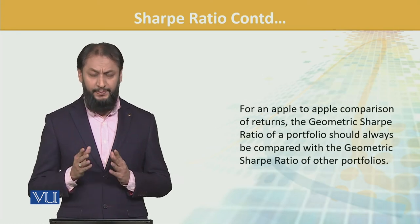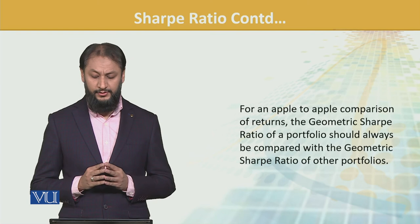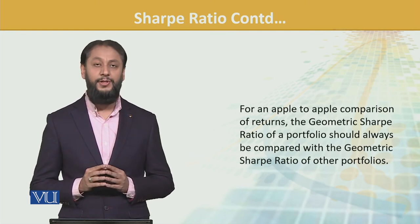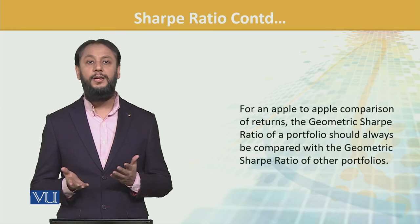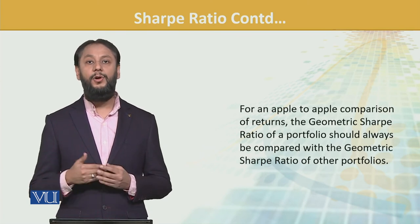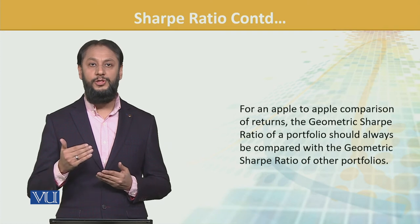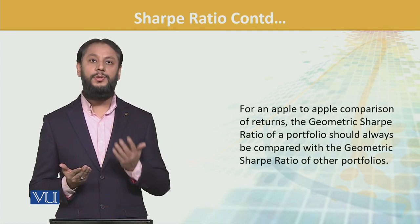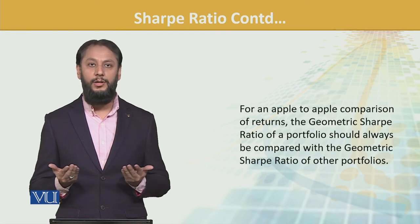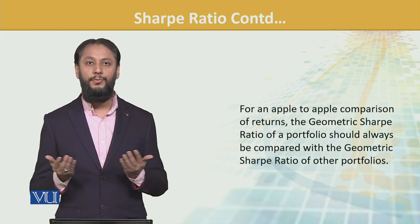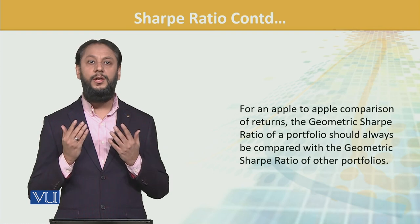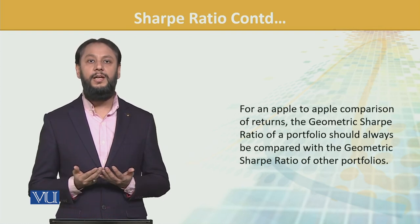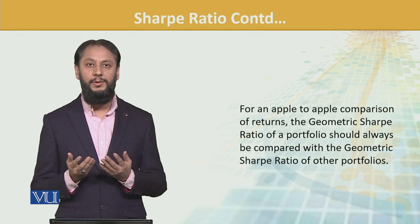For an apple-to-apple comparison, geometric Sharpe ratio of one portfolio should always be compared with geometric Sharpe ratio of another. ये बड़ी important बात है. जब आप geometric figures लेंगे तो return percentages थोड़ी कम आएंगे. तो आप एक portfolio को geometric करें दूसरे को arithmetic करें, that will not make sense. If you are comparing, both should be calculated using the same logic and same assumptions — फिर वो comparative बनती है.